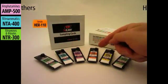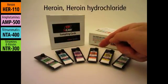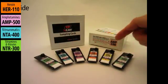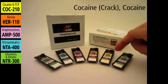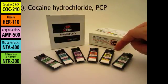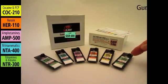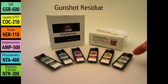The Heroin-110 card is for detection of heroin, the COPE-210 card is for detection of cocaine and PCP, and the GSR-600 card is for detection of gunshot residue.